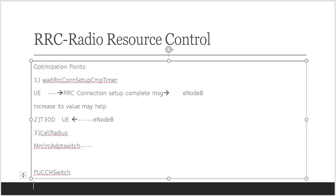The last point is tech planning. If tech planning is wrong, these parameters, timers, counters, and switches may increase RRC MO signaling failure. You need to check tech planning as per your network and ensure there are no mistakes — tech planning must be correct. So these are the parameters, timers, counters, and switches which will help you in increasing RRC setup success rate. That's all for this topic. We will meet you in the next video. Thank you.